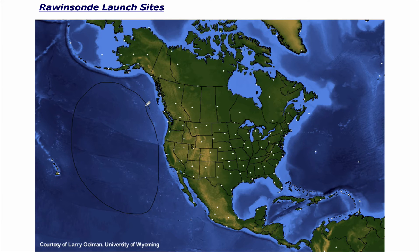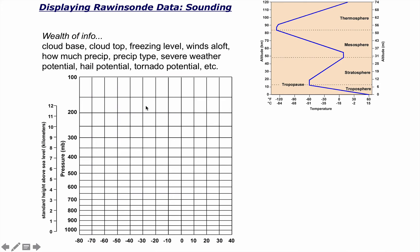When the rawinsonde is launched, we plot the data on a sounding diagram — what you're looking at is called a Stuve diagram. In future atmospheric science classes you'll use a skew-T log-P diagram, but for now let's look at what this diagram shows. It has temperature in Celsius on the x-axis increasing to the right, and on the y-axis it has pressure decreasing with height and altitude increasing with height. So this is essentially temperature versus pressure, or temperature versus altitude.